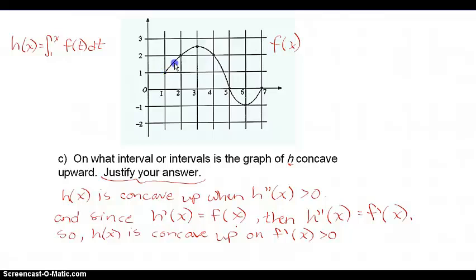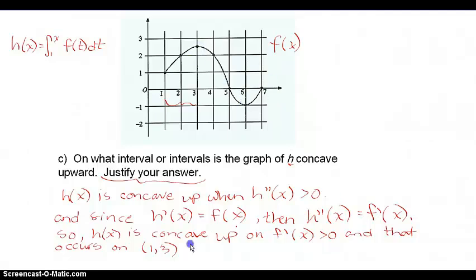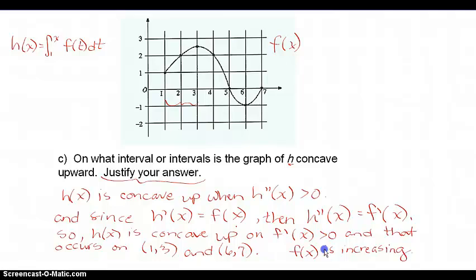Looking at the graph, positive slopes occur from 1 to 3, and also between 6 and 7. So those are the intervals where h is concave up. You can justify either by saying f prime is positive or that f is increasing — same thing. As long as you show you know these relationships and give the correct intervals, you've earned your justification.